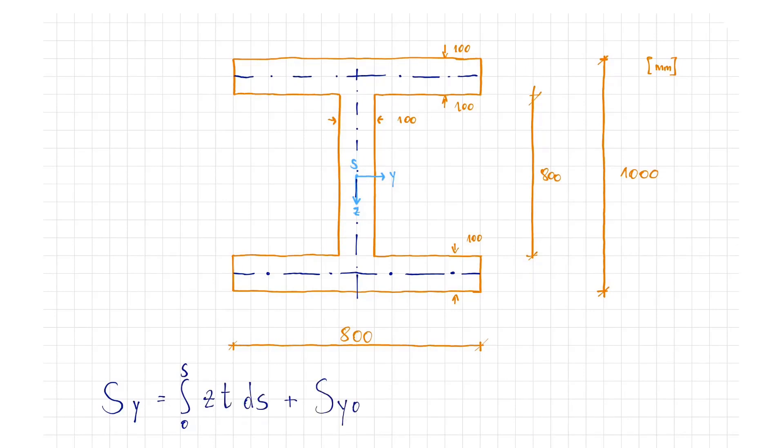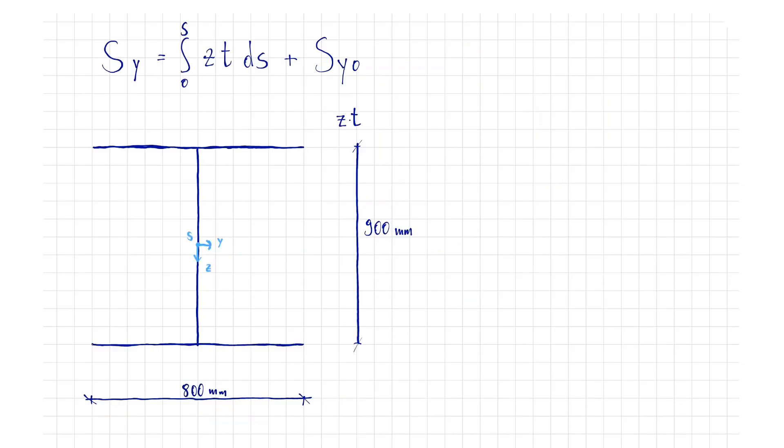Now, let's draw the Zt distribution. In the lower flange, it is constant with the value of 450 square centimeters, or 45 centimeters Z distance times 10 centimeters flange thickness.